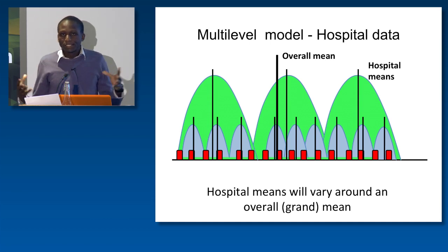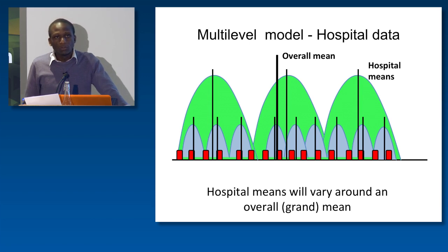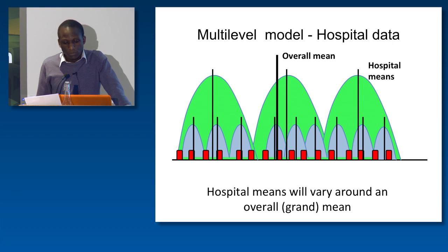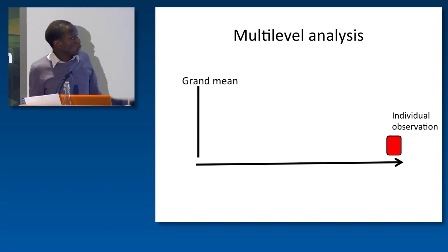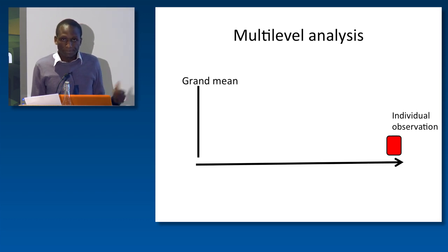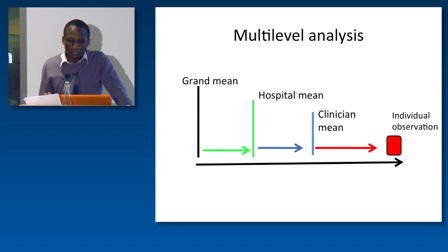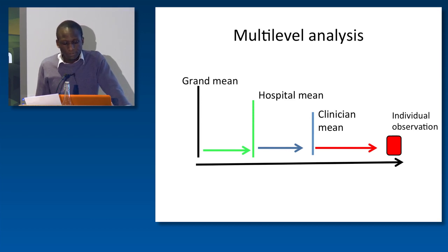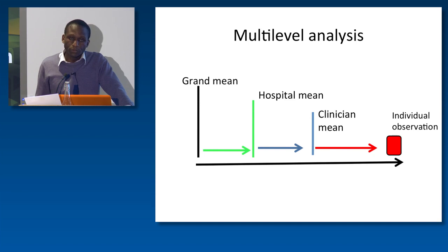The same happens when you generate a data set from different hospitals. There will be an overall mean for, say, 10 or 20 hospitals, and all those means will be distributed around the overall performance across all hospitals. Traditional quantitative analysis mostly quantifies how much individual patient observations vary from the total grand mean. Multi-level methods allow you to break down this variation into components: hospital-specific variation, clinician-specific variation, and residual variation at the patient level that cannot be explained even after accounting for hospital and clinician effects.